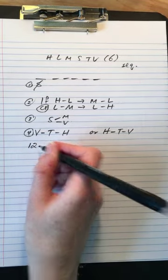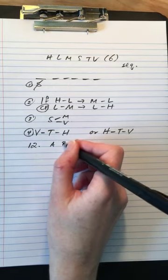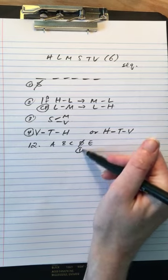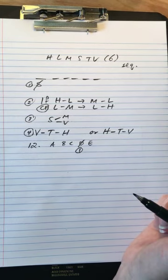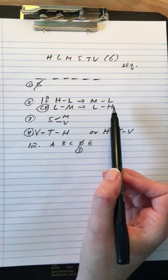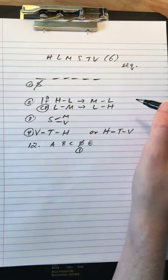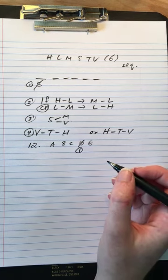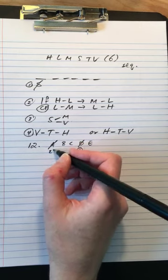Okay, question 12. We'll do process of elimination, just finding the rule breakers. So D we can eliminate based on rule 1. Rule 2: L should be on one side of H and M, not between them. So A breaks rule 2.